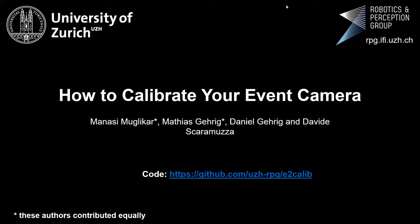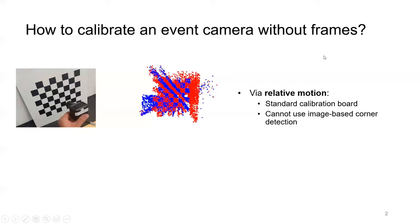Welcome to our presentation on how to calibrate your event camera. Event cameras are asynchronous sensors that pose a paradigm shift in the way visual information is acquired.